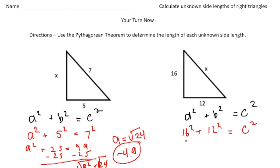And 16 squared is 256. So 256 plus 12 squared is 144 which equals c squared. And 256 plus 144 is 400 which equals c squared.